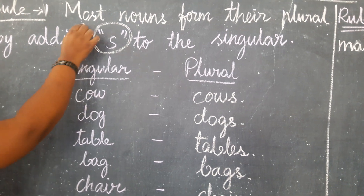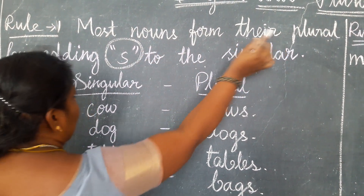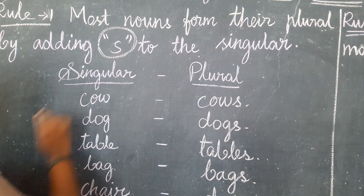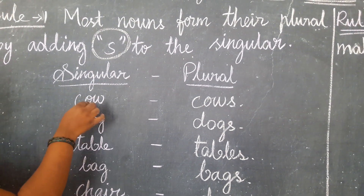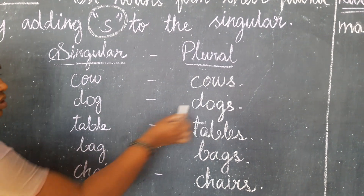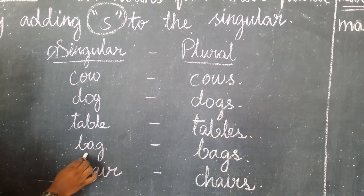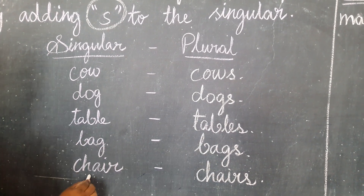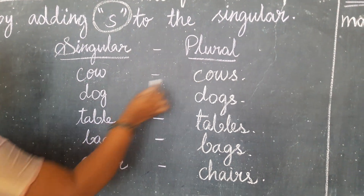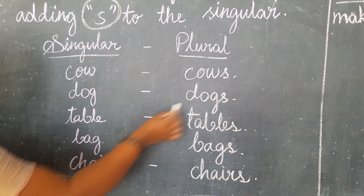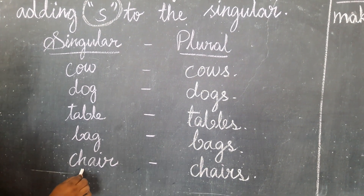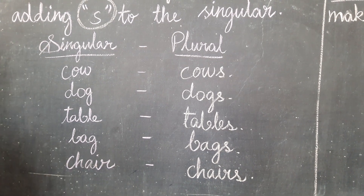Once again I will repeat: cow — cows, dog — dogs, table — tables, bag — bags, child — children. I hope it is clear.